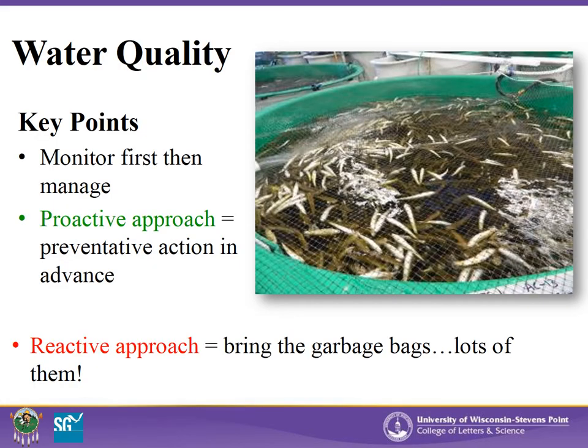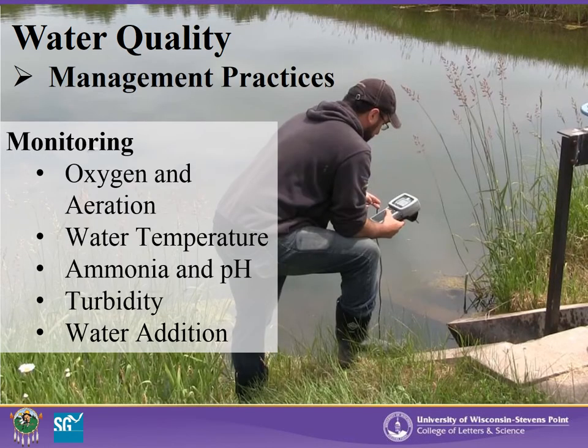It is important to build a baseline for your pond water quality through regular monitoring of important pond parameters. This will allow you to recognize when there is a problem early enough to take steps to fix it. Become a proactive manager — have a proactive approach to stop potential problems before they get a chance to turn into a large or catastrophic issue. A reactive approach to farming comes with poor monitoring and preparation, which leads to detrimental results to your fish and business.